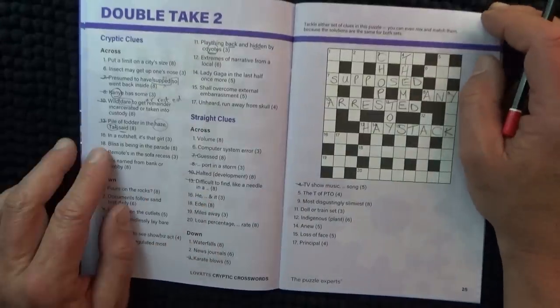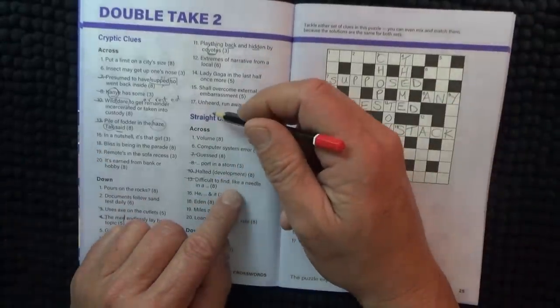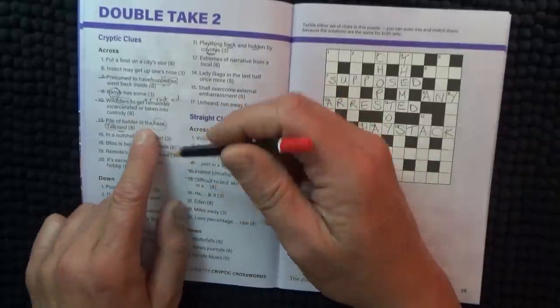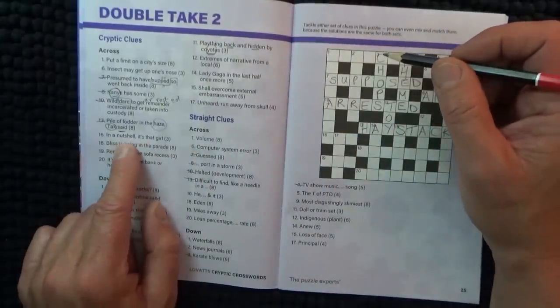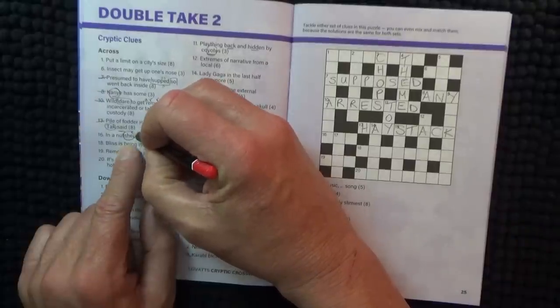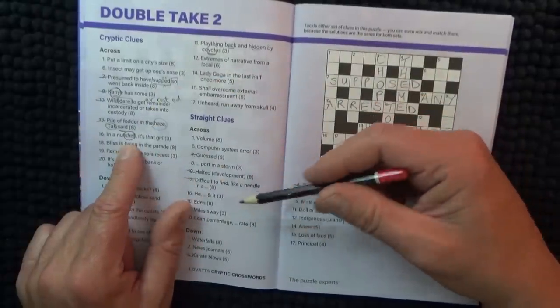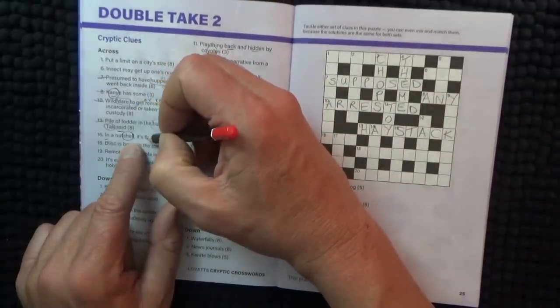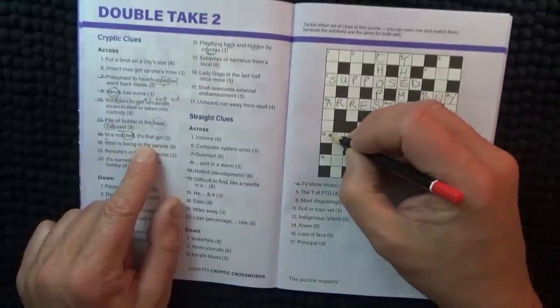And what is this? Oh there we go, difficult to find like a needle in a haystack. A stack. So here you can see how that regular clue or straight clue confirms the cryptic clue. In a nutshell, it's that girl, she I'd say. He, she, it. In, so it's in a nutshell which is shell. It's that girl. It's got to be she.